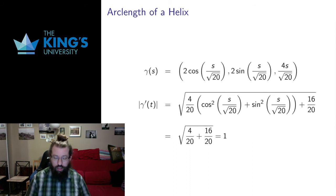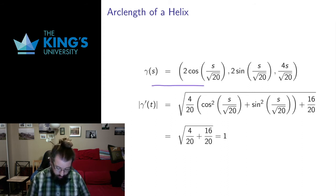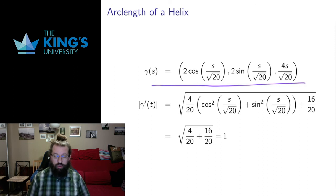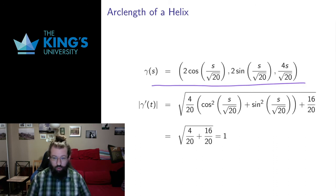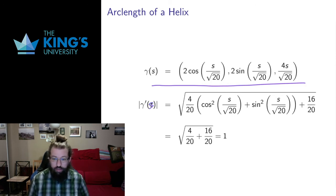I reparametrized a helix at the end of last week by arc length, so that I got the helix in terms of its arc length parameter s, and I got this expression where gamma of s was these three terms. This is the parameterization where the distance and the time are the same — I move along the curve one unit of distance per one unit of time. Let me calculate the speed of this thing in the arc length parameter s.